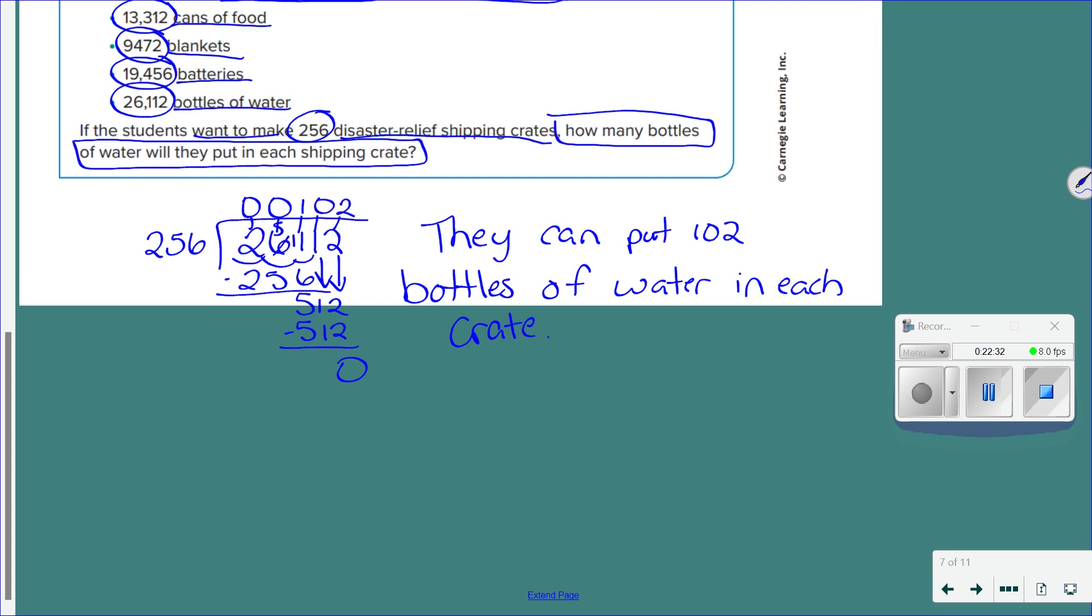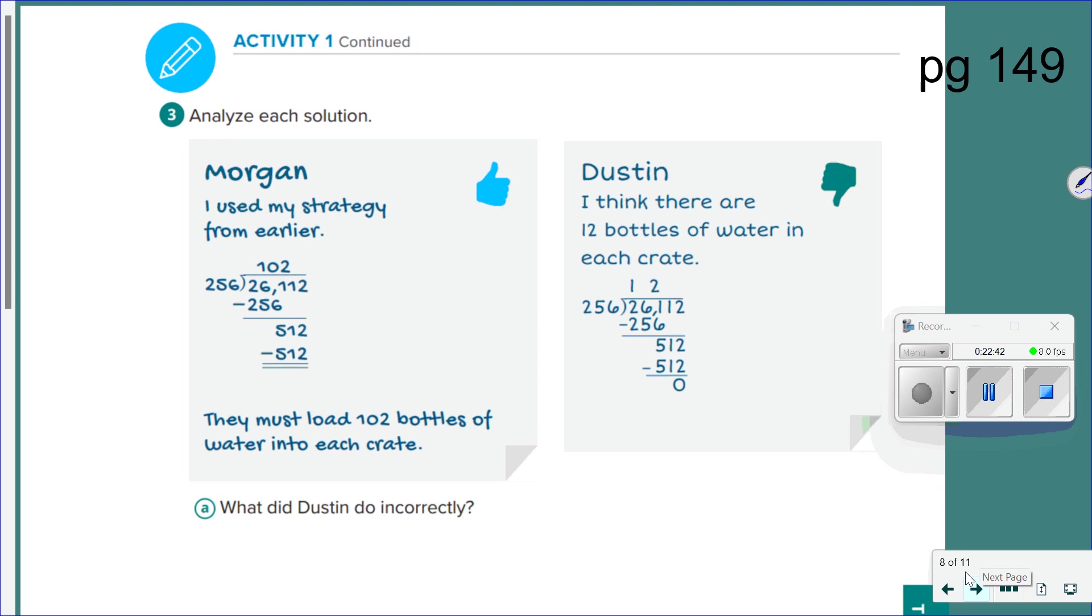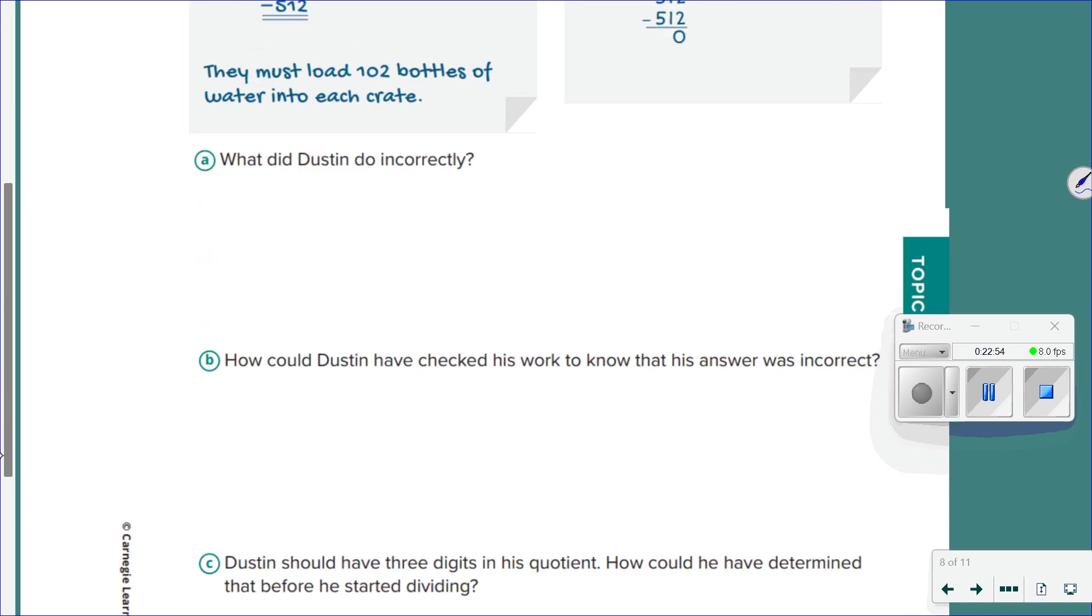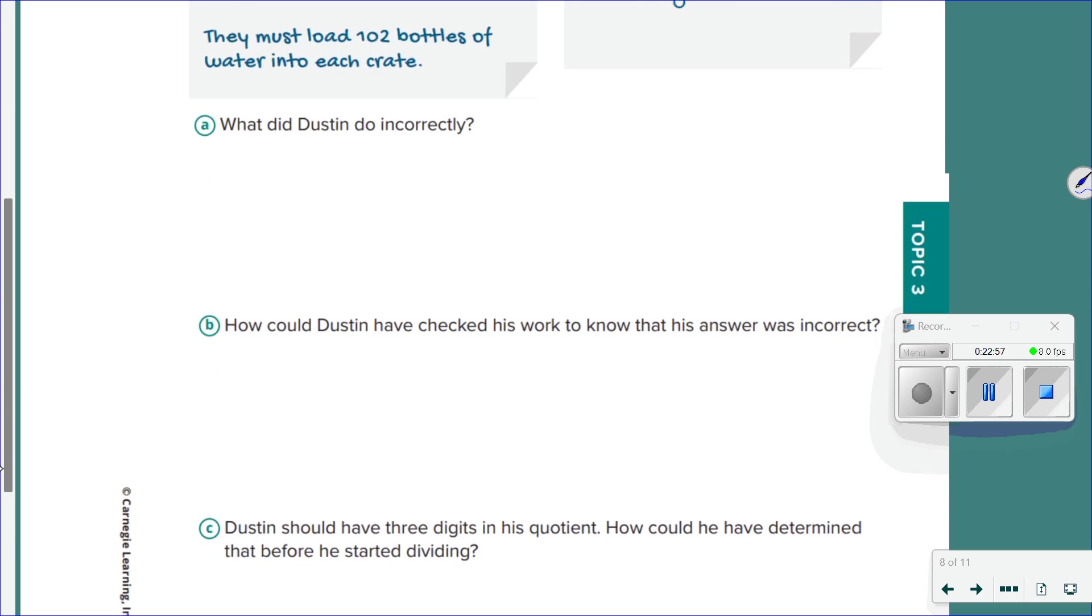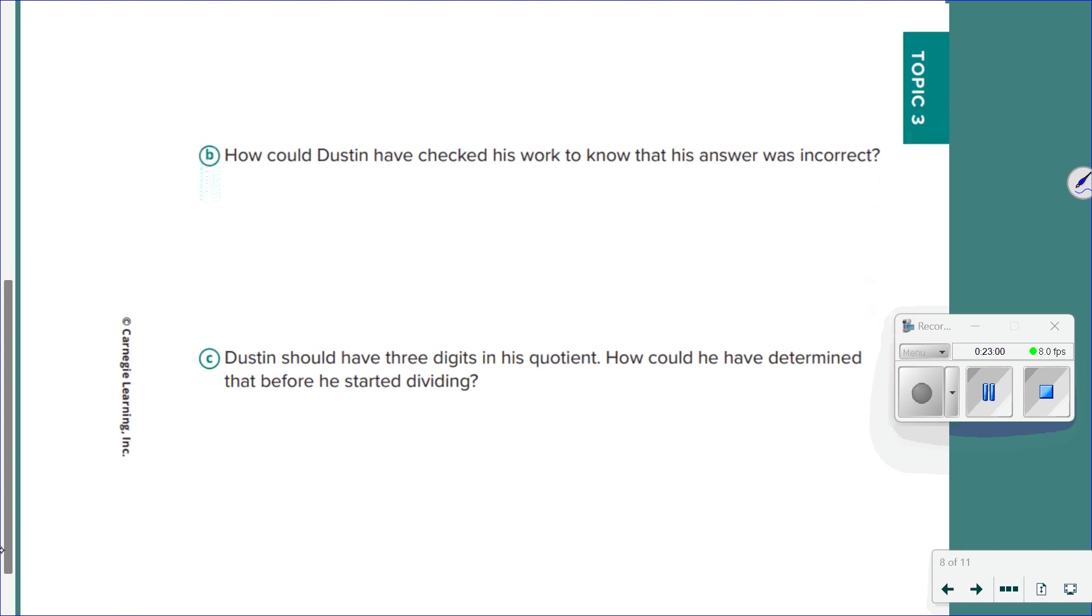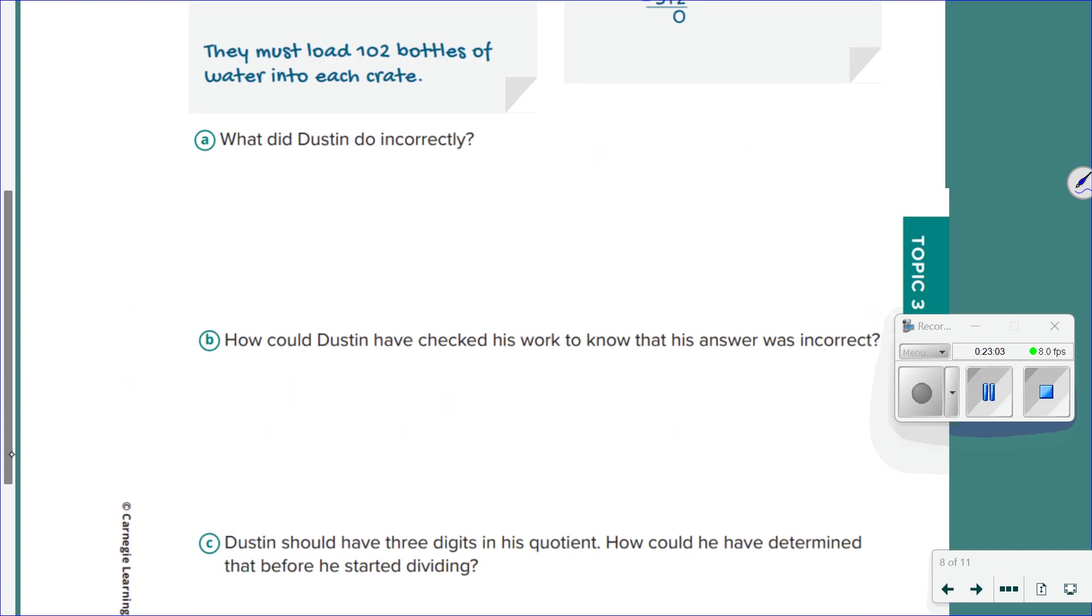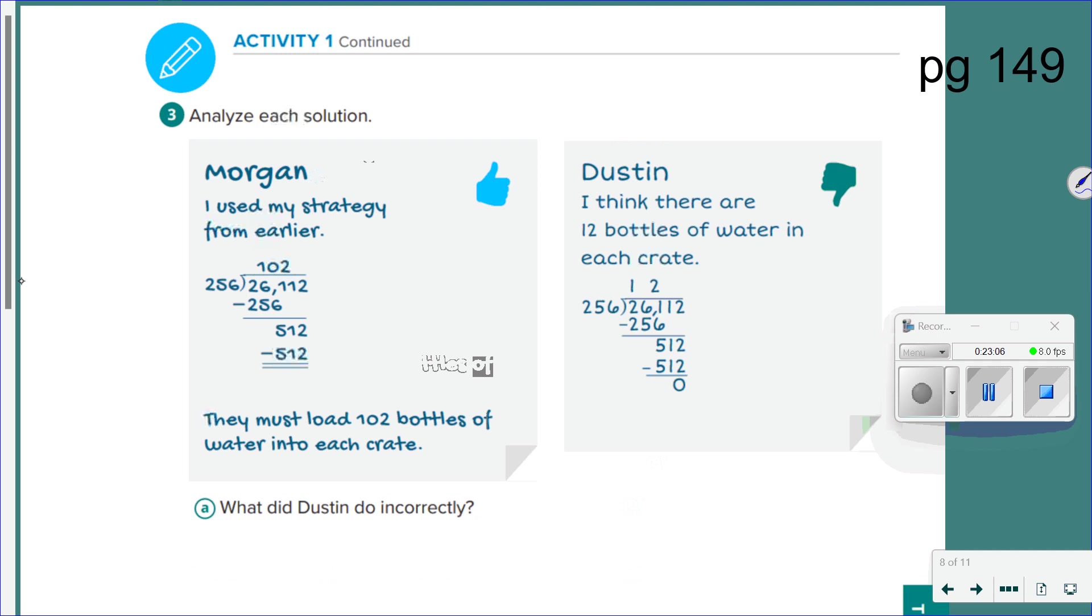Any questions about that one? Good. Let's look at the next page. Analyze Morgan and Dustin solutions. What did Dustin do incorrectly on his problem? How could Dustin have checked his work to know that his answer was incorrect? And Dustin should have three digits in his quotient. How could he have determined that before he started dividing? So you are examining his problem and telling me what he did wrong and how he should have done it correctly. Answering A, B, and C. Any questions? Good. You have four minutes. Go for it.